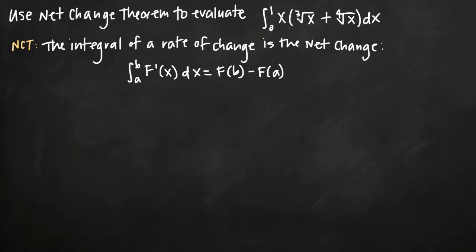Today we're going to be talking about how to use the net change theorem to evaluate an integral. In this particular problem we've been given the integral of x times the third root of x plus the fourth root of x, and we've been asked to evaluate it on the range 0 to 1. So our limits of integration are 0 and 1.